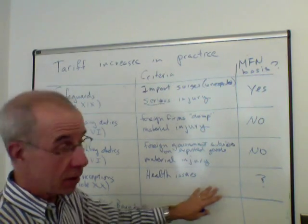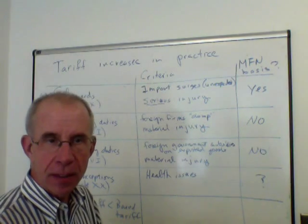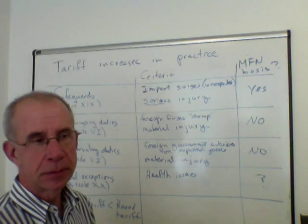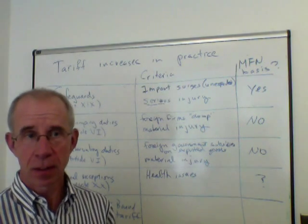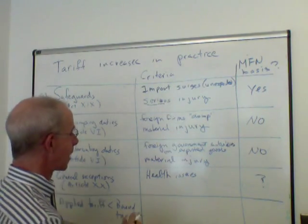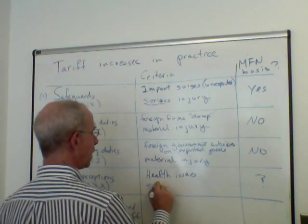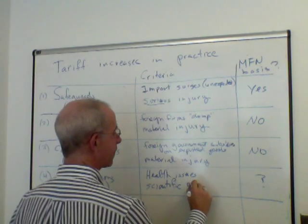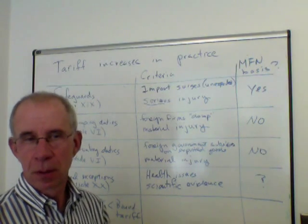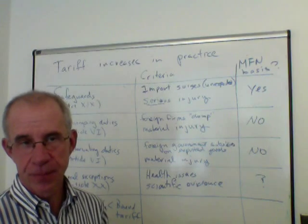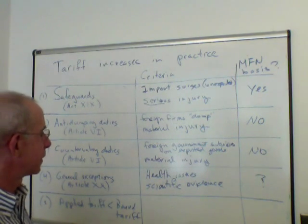These duties could be on an MFN basis, or they could be targeted — for example, only imports from Canada if there's a swine flu outbreak contaminating some meat, so Canada alone is targeted. Or it could be a general ban if there is some sort of international crisis. Importantly, this must be done on the basis of scientific evidence. You can't simply say these products are dangerous and ban them — there needs to be a scientific or health basis for that imposition.